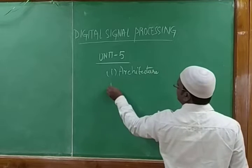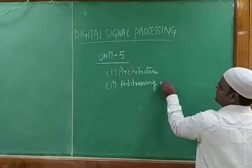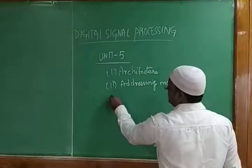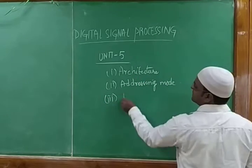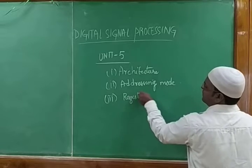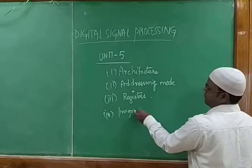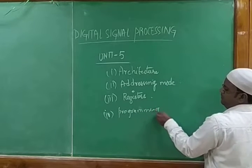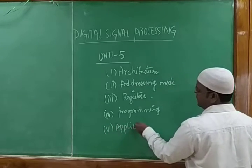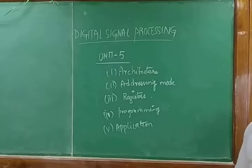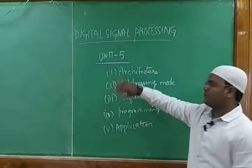When you want to design or discuss any processor, the first thing to see is its architecture. The second is its addressing mode. Third is its registers — how many bits the registers have. Fourth is its programming or working. Fifth is the application — where it is going to be applied and for what kind of application it is going to work.